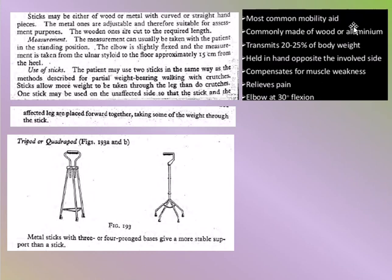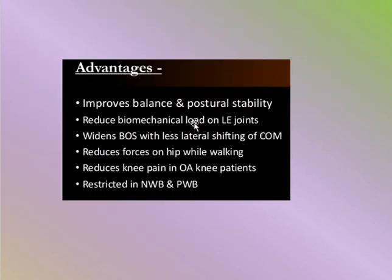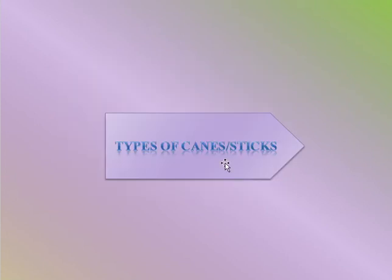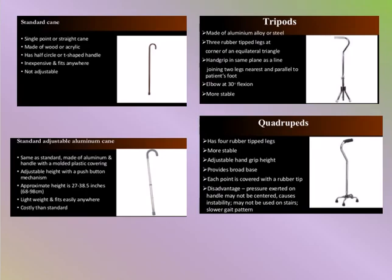The cane is the most common mobility aid, commonly made of wood or aluminum, and transmits 20 to 25% of body weight. It is held in the hand opposite to the involved side, compensates for muscle weakness, reduces pain, and the elbow should be at 30 degrees flexion. Advantages: improved balance and postural stability, reduced biomechanical load on lower extremity joints, wider base of support with less lateral shifting of center of mass, reduced forces on the hip, and reduced knee pain in osteoarthritis patients. Restricted in non-weight bearing and partial weight bearing. Types include: standard canes, tripods, standard adjustable aluminum canes, and quadrupods.